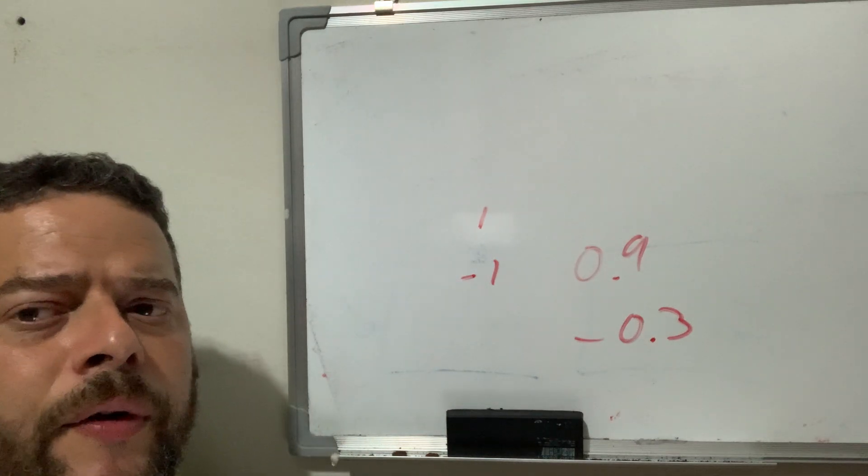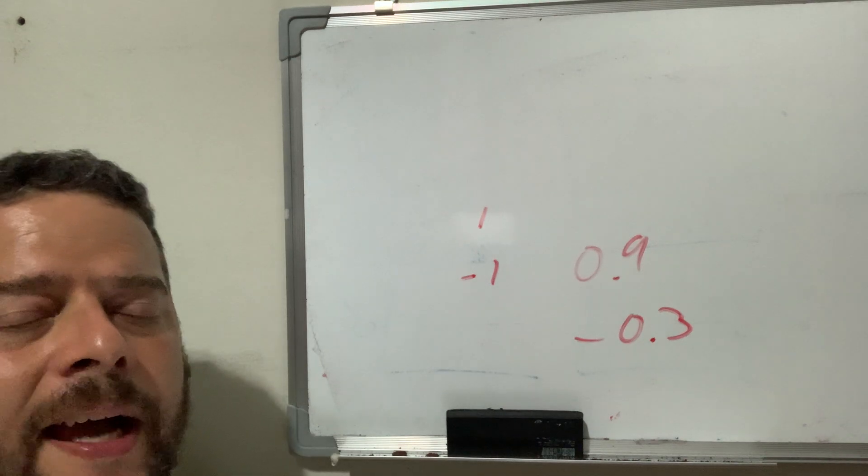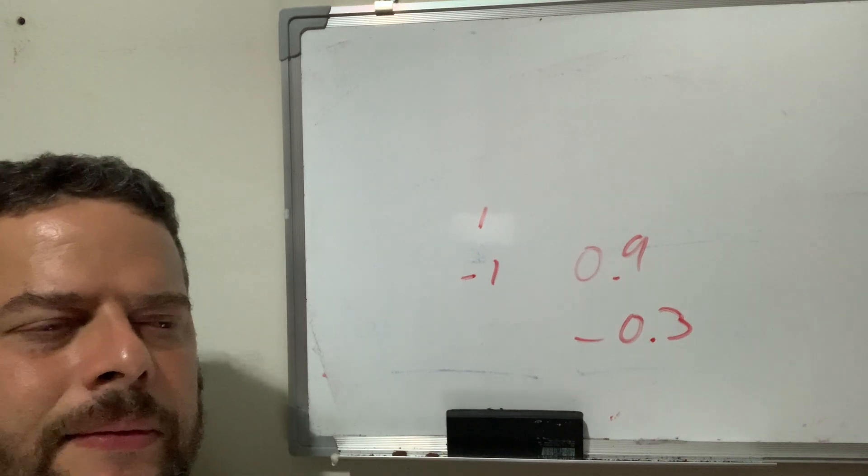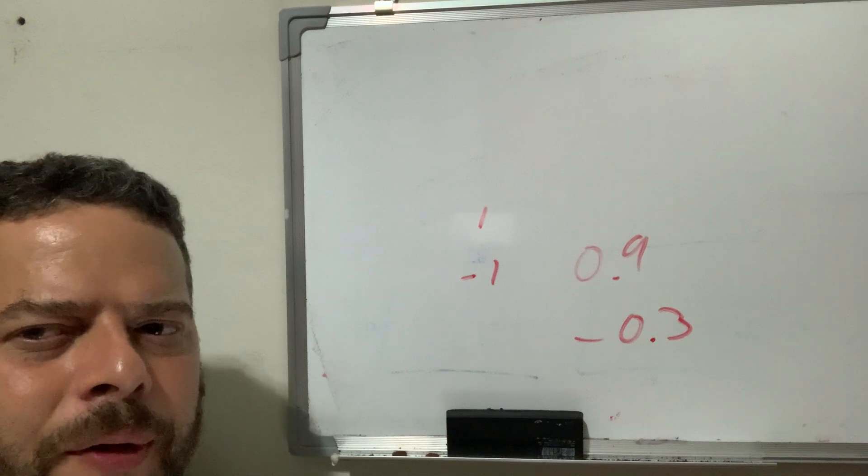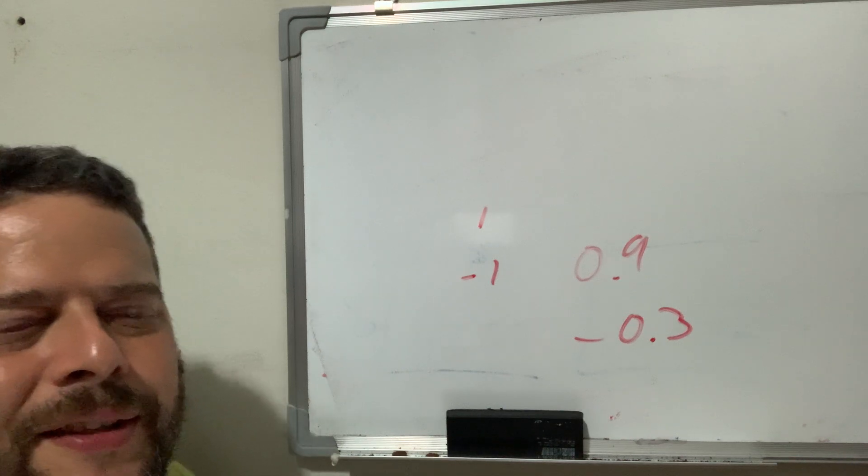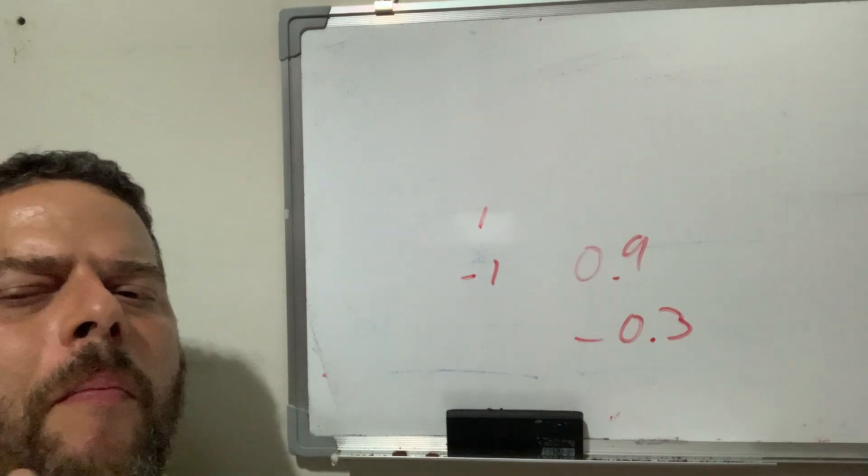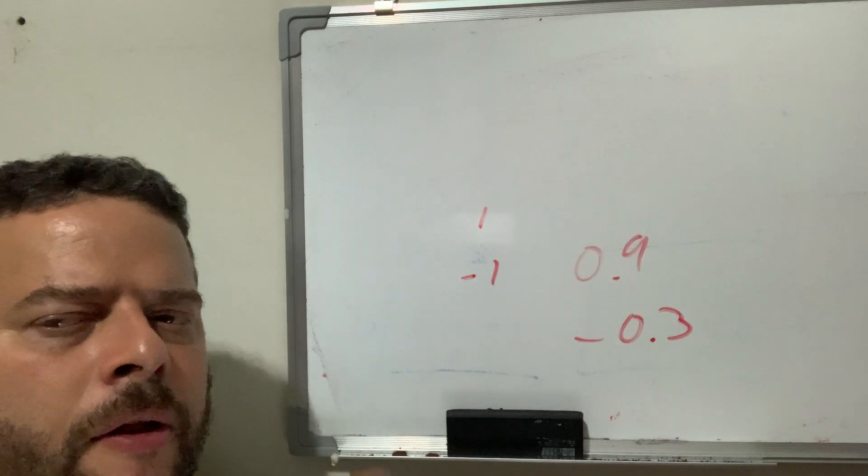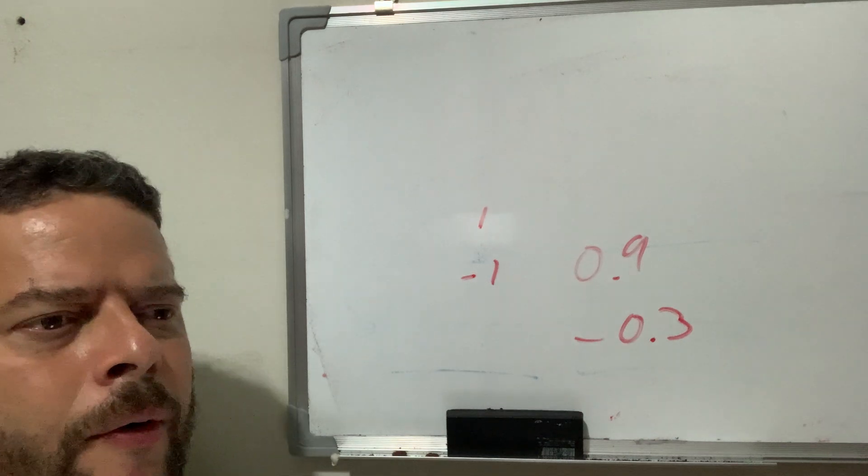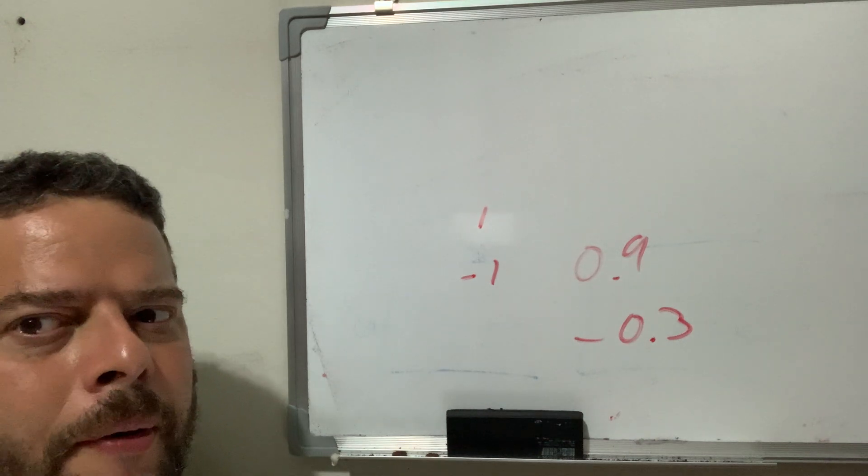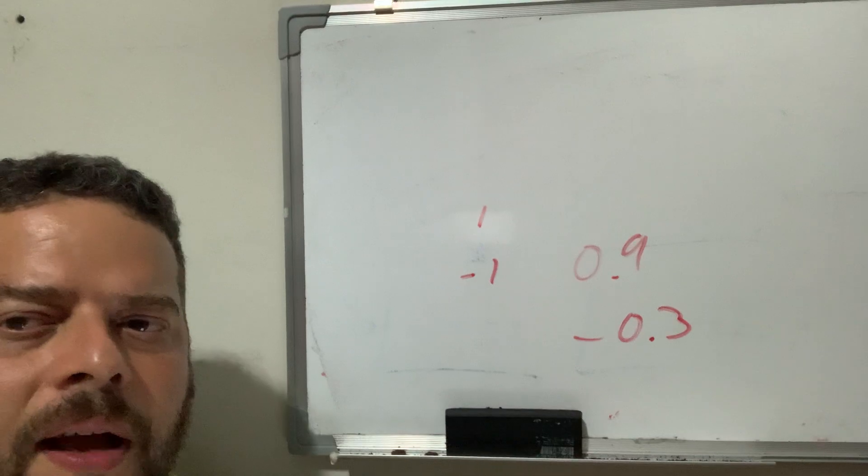So R squared is incredibly important when you're trying to find actual links between things. Well, not really, because correlation does not determine causation. But it can help you explain how much maybe one variable might explain another variable. But we're going to go into that way deeper later on. That's it for today. Have a great day.